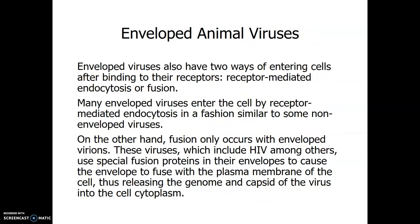If an animal virus is enveloped, enveloped animal viruses can enter through receptor-mediated endocytosis — similar to non-enveloped viruses, where the whole virus enters the cell. But if it's a naked virus, it doesn't have to enter the cell; it can just inject its DNA into the cell, which causes the cell to make more copies of the virus. Fusion, however, can only happen with enveloped viruses — naked viruses cannot undergo fusion.